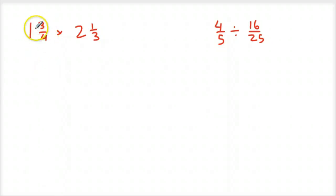So I can just take the denominator times the whole number out in front, and then add that to the numerator. So four times one is four, four plus three is seven fourths, times three times two is six, six plus one is seven, so that's seven thirds. And now when I multiply fractions, I can just multiply across.